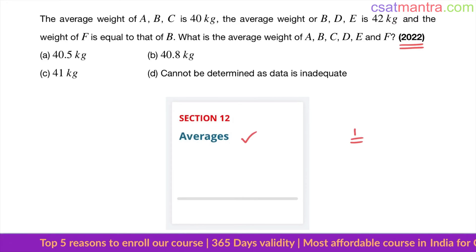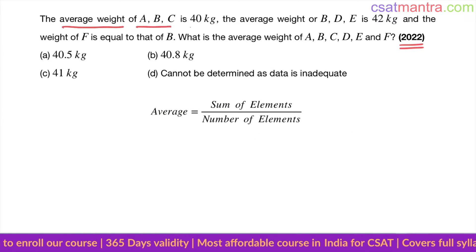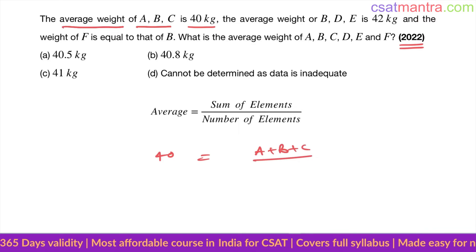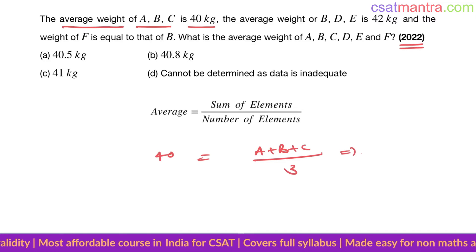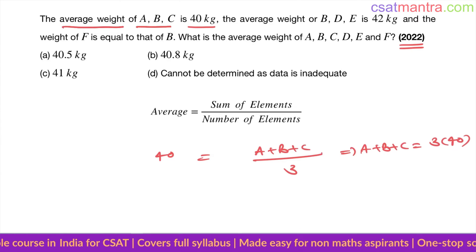The average weight of A, B, C is 40 kg, so weights of A plus B plus C divided by three people. So A plus B plus C is equal to 3 into 40. I am not going to simplify it here.